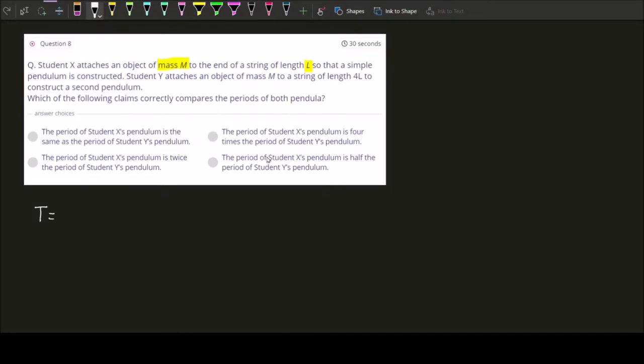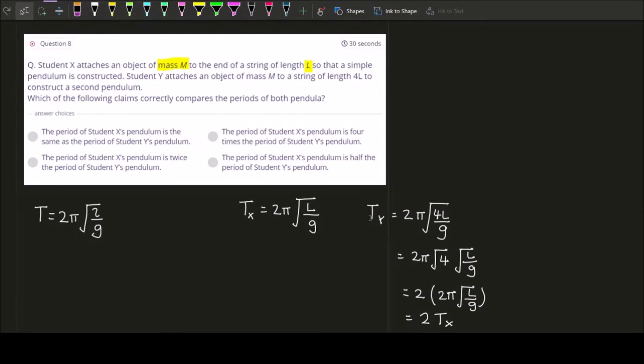Well you have to recall that the period for a simple pendulum is 2π√(L/g). So for the period of student X it will be 2π√(L/g) because the length of the pendulum is L, whereas for the period of student Y that would be 2π√(4L/g). That will mean 2π√4 × √(L/g). Then √4 will be 2 and you have 2π√(L/g) which is 2 times the period of student X. So the period for the pendulum of student Y is twice the period of the simple pendulum of student X.